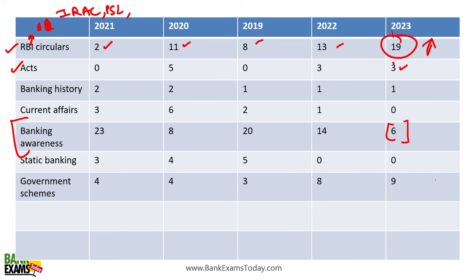Government schemes trend is going up — more questions are now being asked from government schemes, especially schemes related to banking and financial inclusion: the Mudra scheme, PMEGP, Kisan Credit Card, PPF, NPS, all investment schemes, all insurance schemes, and schemes for farmers. I have made proper notes and videos for that, and we will also provide a question bank. Financial management topics like ratio analysis and capital budgeting have not been asked for the past five years, but we are still teaching it because it's part of the syllabus.